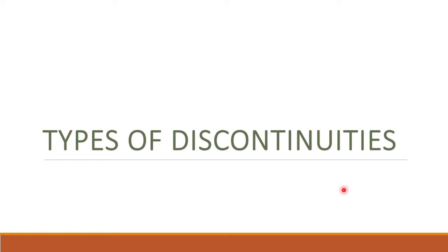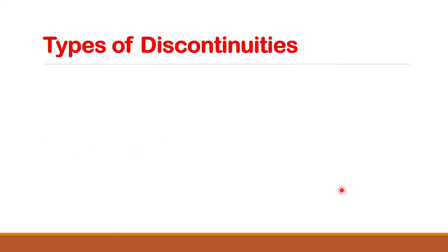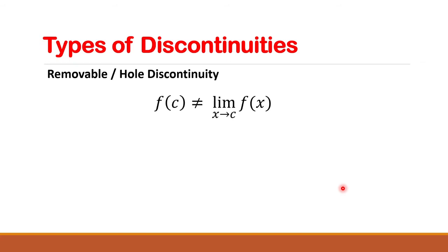In this video, we're going to cover types of discontinuities. The first type is removable or hole discontinuity, where f is not equal to the limit of the function as x approaches c. In this case, the limit exists.